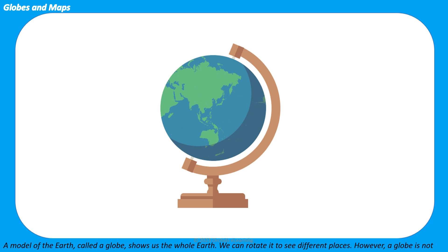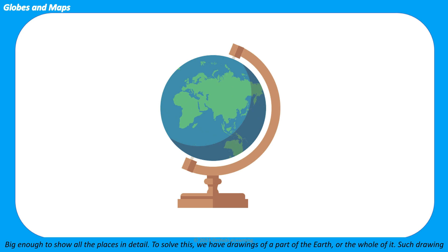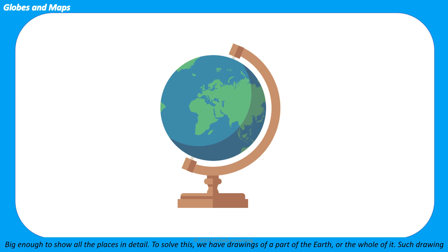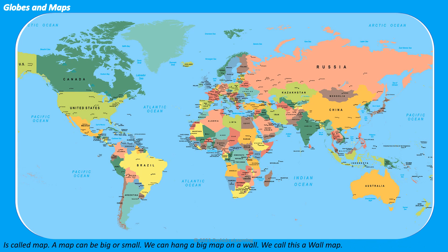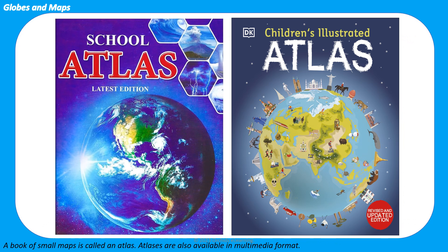However, a globe is not big enough to show all the places in detail. To solve this, we have drawings of a part of the earth or the whole of it. Such a drawing is called a map. A map can be big or small. We can hang a big map on a wall - we call this a wall map. A book of small maps is called an atlas.